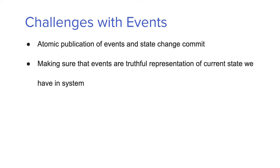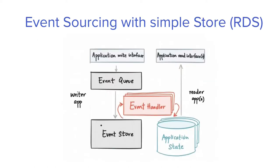Events are atomic publications and they commit to a state. Initially you have state X, some event comes and changes the system state to X1. The problem is ensuring that any given event is the truthful representation of the current system state. If 20 events have already passed and you're receiving the 21st event, you cannot identify the truthful current state from that event alone. So how do we actually maintain state?